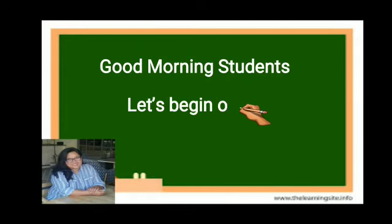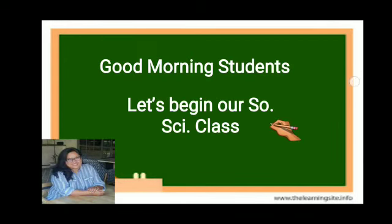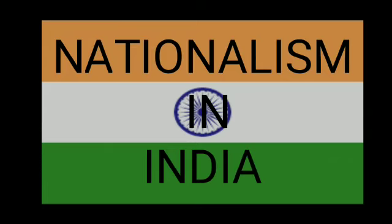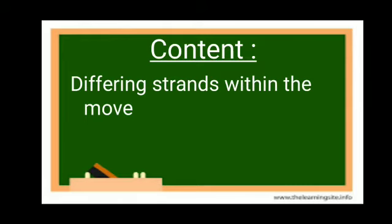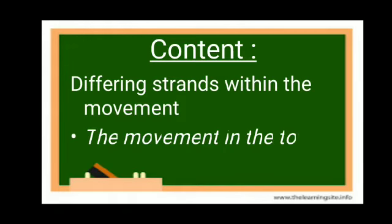Good morning students, let's begin our social science class. In continuation of NCRT history chapter 'Nationalism in India,' this is my fourth video. The main content is 'Differing Strengths Within the Movement,' under which I'm going to explain the movement in the towns. The non-cooperation Khilafat movement began in January 1921. Various social groups participated, each with its own specific aspirations. All responded to the call of Swaraj, but the term meant different things to different people.